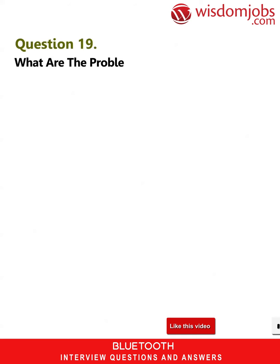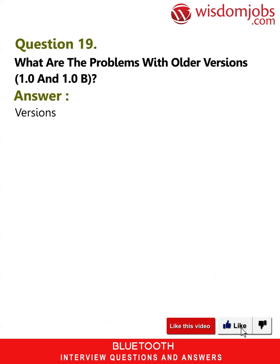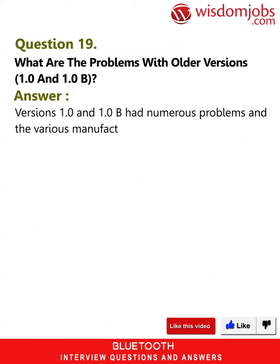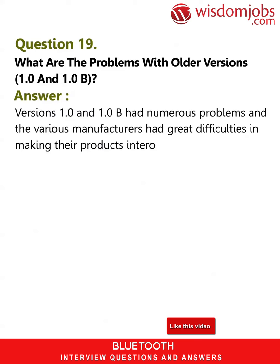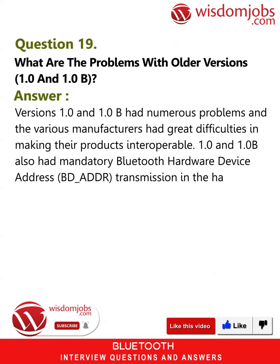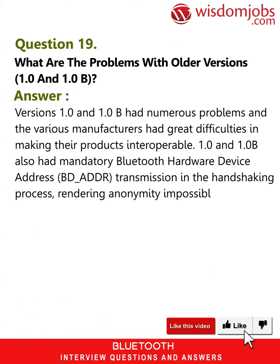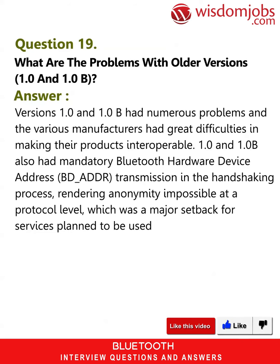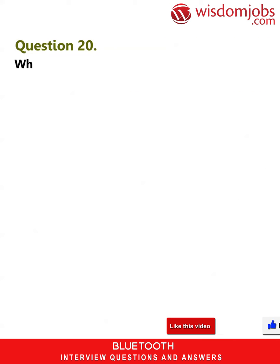Question 19: What are the problems with older versions 1.0 and 1.0b? Answer: Versions 1.0 and 1.0b had numerous problems and the various manufacturers had great difficulties in making their products interoperable. 1.0 and 1.0b also had mandatory Bluetooth hardware device address (BD_ADDR) transmission in the handshaking process, rendering anonymity impossible at a protocol level, which was a major setback for services planned to be used in Bluetooth environments such as consumerism.